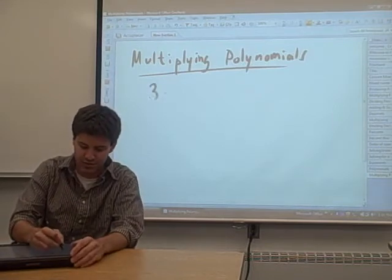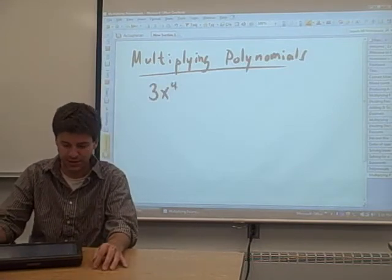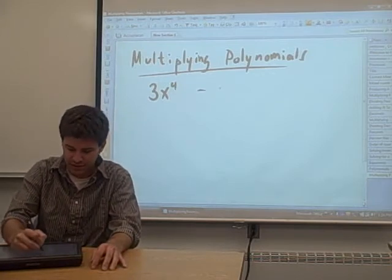I want to remind you of a little bit of terminology you may have forgotten. Say you have a polynomial that just has one term in it, say 3x to the fourth, something like that, and it only has one term in it, it's called a monomial.